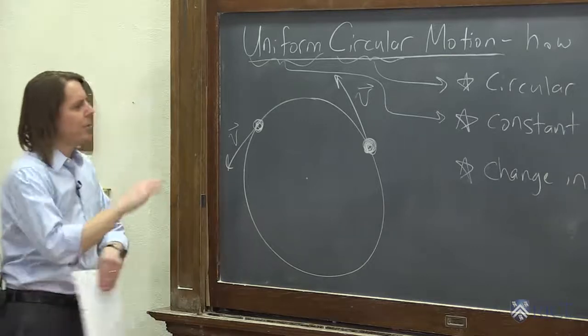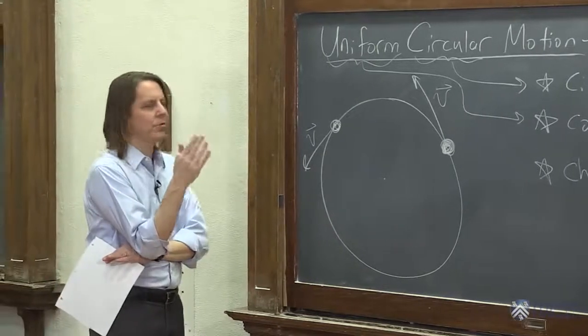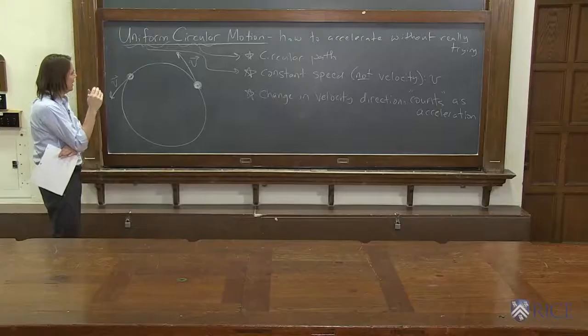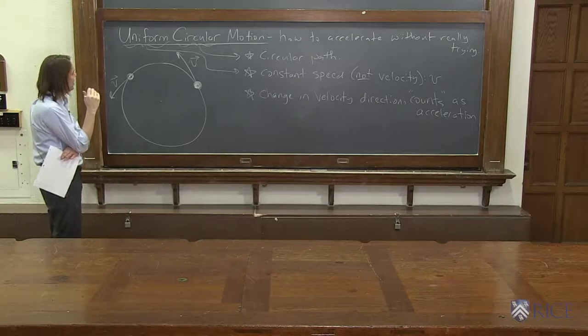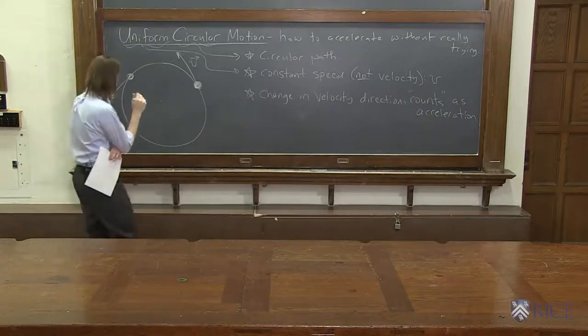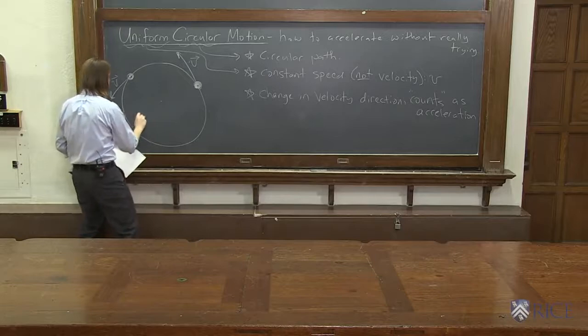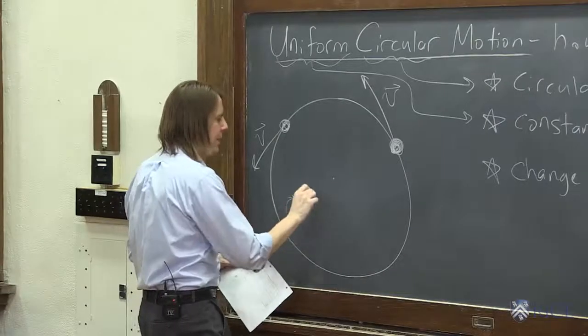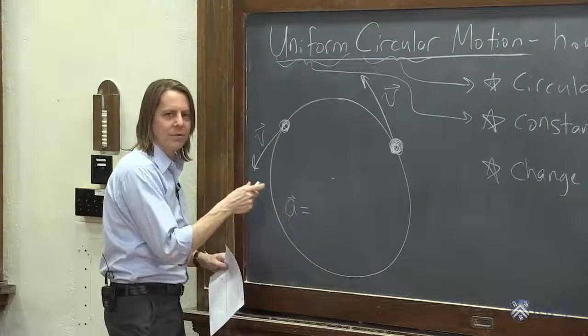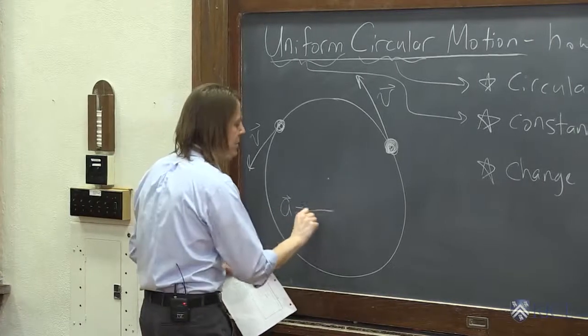So now we want to think, how can we characterize this acceleration? So it's a little tricky. One way is to go back to your definition of acceleration and say A, the vector, is delta v, the change in velocity, over delta t.